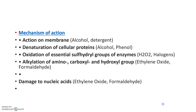The mechanisms of action of disinfectants include: action upon the membrane — examples are alcohol and detergents; denaturation of cellular proteins — examples are alcohol and phenol; oxidation of essential sulfhydryl groups of enzymes — examples are hydrogen peroxide and halogens; alkylation of amino, carboxyl, and hydroxyl groups — examples are ethylene oxide and formaldehyde, which are the most powerful disinfectants; and damage to nucleic acid, either DNA or RNA — examples include ethylene oxide and formaldehyde.